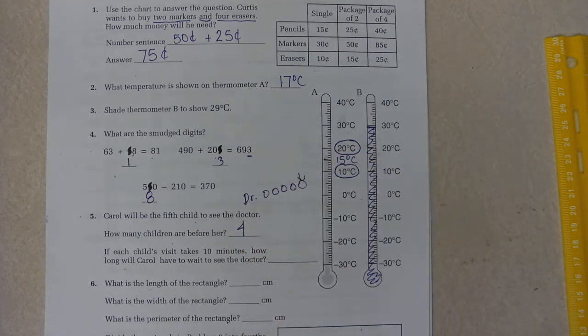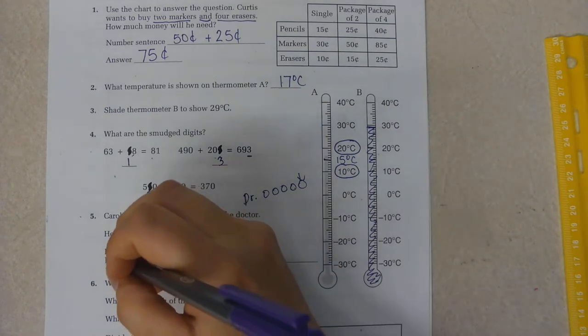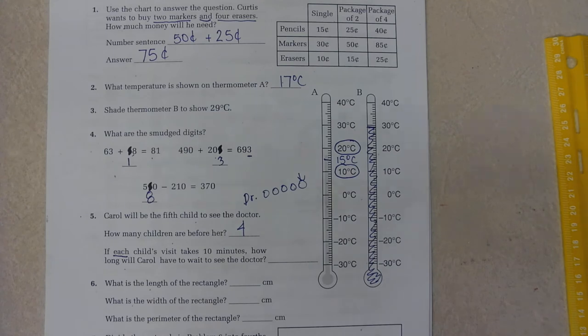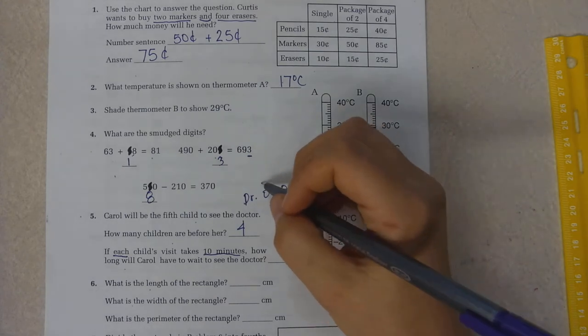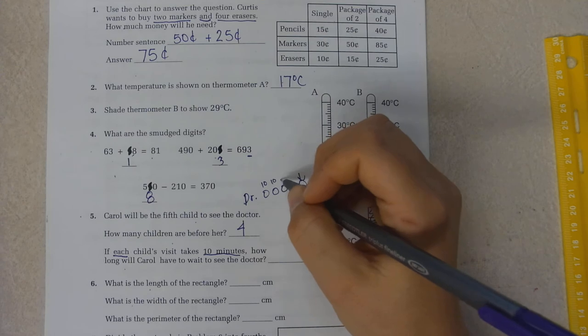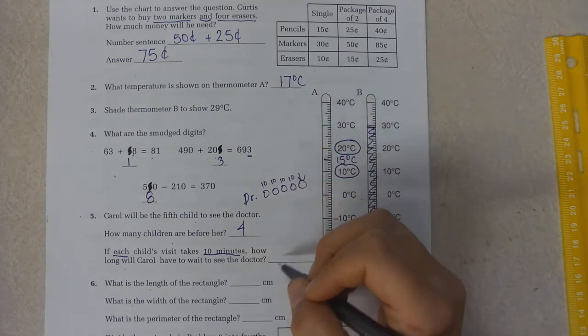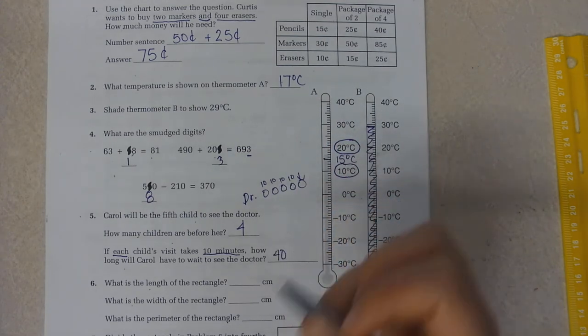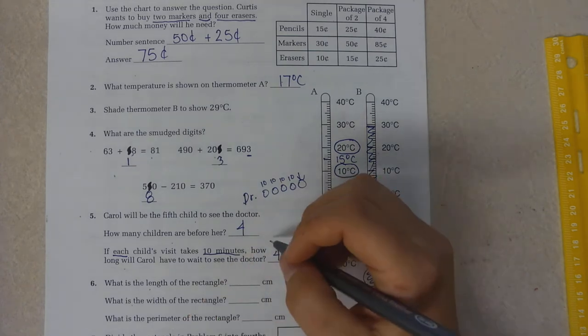If each child's visit takes 10 minutes, this word 'each' tells me I'm going to probably multiply. 10 minutes, each of them takes 10 minutes. How long will Carol have to wait? 10, 20, 30, 40. She'll have to wait 40 minutes or 10 times 4 equals 40.